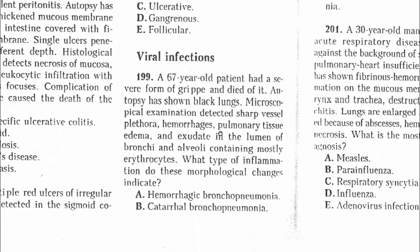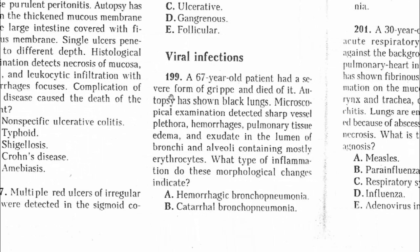Now viral infections. Question 199: A 67-year-old patient had a severe form of croup and died. Autopsy showed black lungs; microscopic examination detected sharp vascular plethoral hemorrhages, pulmonary tissue edema, and exudate in the lumen of the bronchi and alveoli containing mostly erythrocytes. The type of inflammation indicated by these morphological changes is hemorrhagic bronchopneumonia.